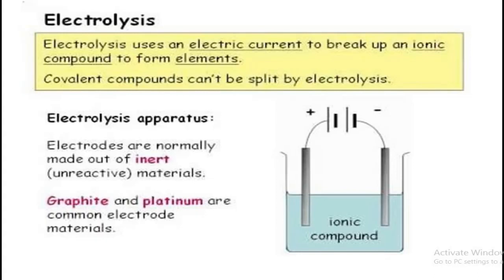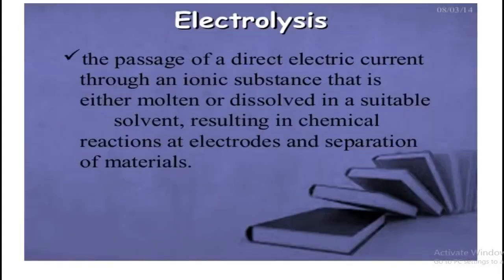Covalent compounds cannot conduct electricity because they are made up of molecules, not ions. So basically, we can define electrolysis as: by the passage of direct current, when we are splitting an ionic compound in the molten or dissolved form — dissolved in a suitable solvent — resulting in a chemical reaction at the electrodes and the separation of material. This introduces a new term: electrodes.